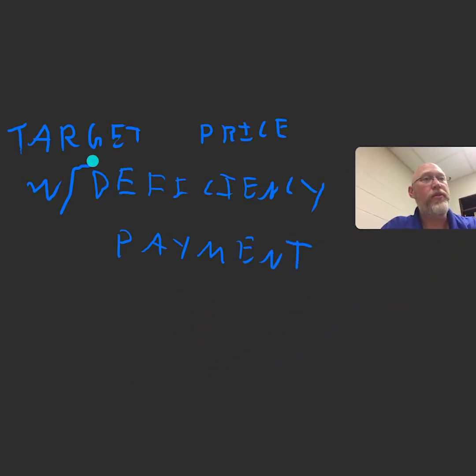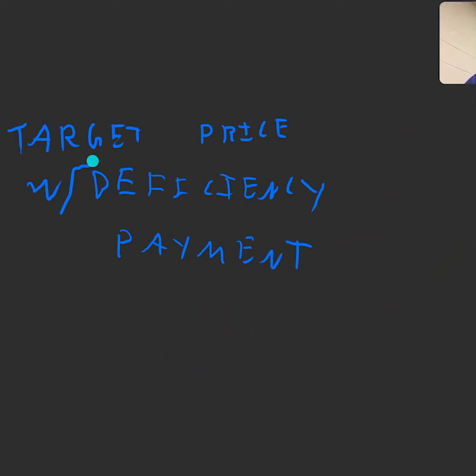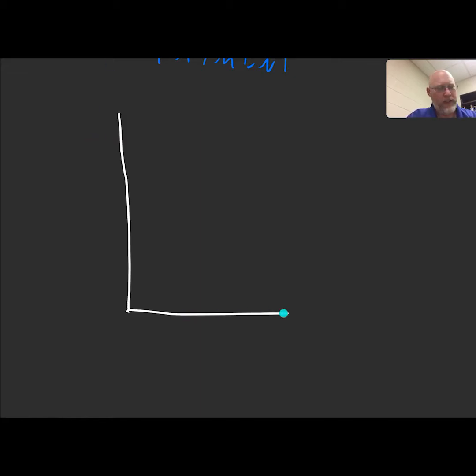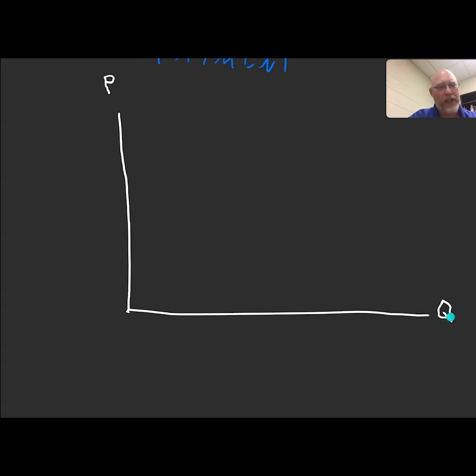Here is the setup, and it's the same setup we always use. We're going to start off by drawing a market diagram. Like all market diagrams, we're going to label the vertical axis with a P for price and the horizontal axis with a Q for quantity. This is the market for corn.